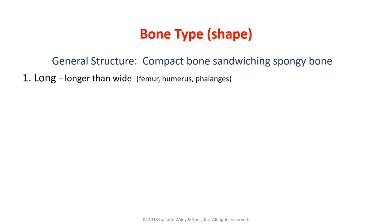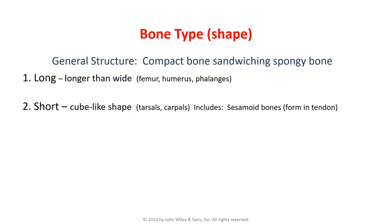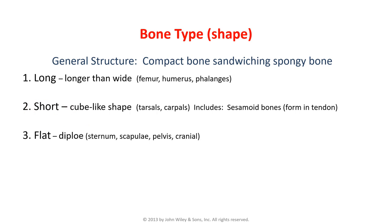Long bones have one dimension longer than their width — the femur, humerus, and the distal phalanges of fingers and toes. Short bones include the more proximal bones of the feet — tarsals — and hands — carpals. Sesamoid bones are found in tendon; they have a cube-like structure and are considered short bones.